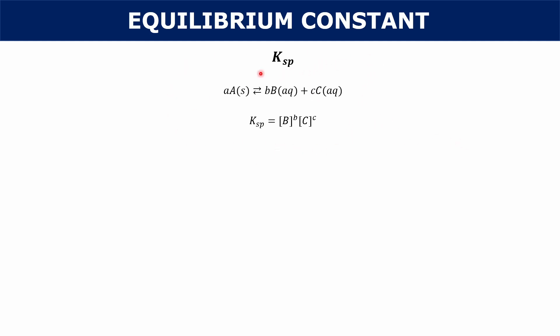If you take a solid and dissolve it, you can calculate its Ksp. If your Ksp is really high, that means you've produced a lot of products, which means the solid has dissociated a lot — so high Ksp means the solid dissociates a lot. On the other hand, if your Ksp is really low, that means your solid does not dissolve very much at all.